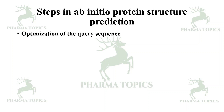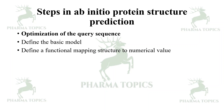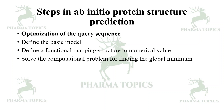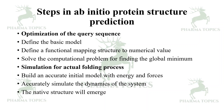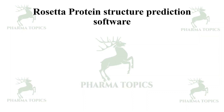The steps in ab initio protein structure prediction are: first, optimization of the query sequence; then define a basic model and a functional mapping from structure to numerical values; solve the computational problem for finding the global minimum; simulate the actual folding process; and build an accurate initial model with energy and forces to simulate the dynamics of the system until the native structure emerges.